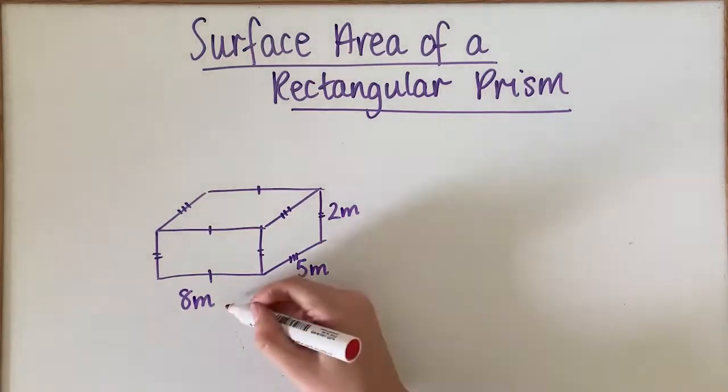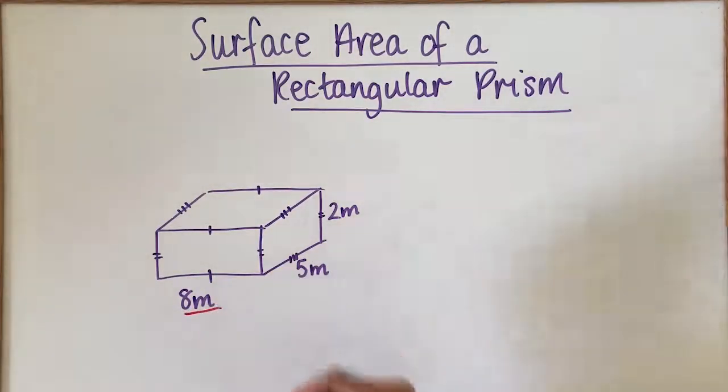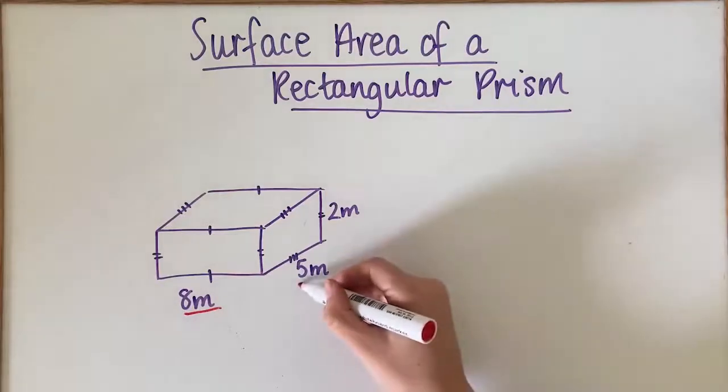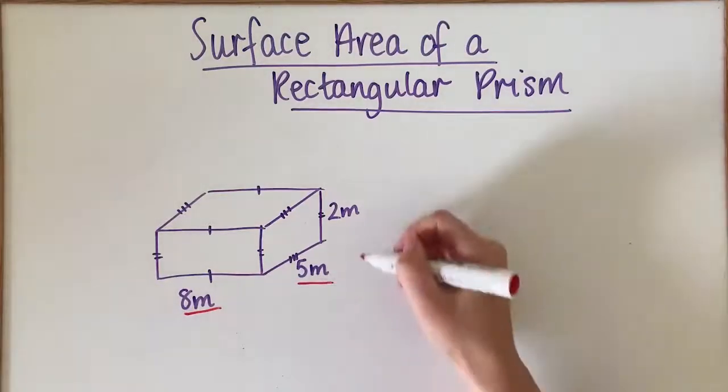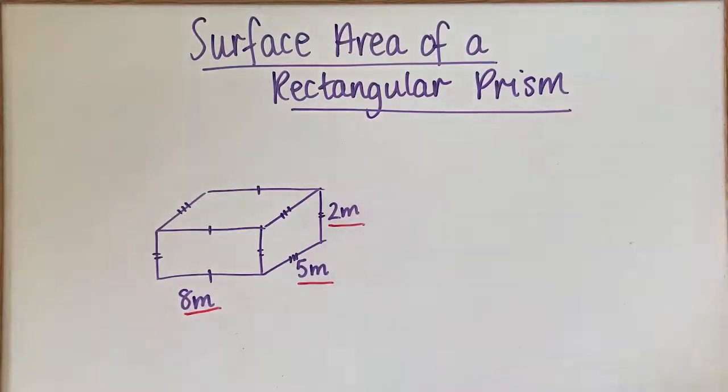So we've got here a length that's 8 metres, we've got the depth of the shape there, and we've also got the width of the shape here.